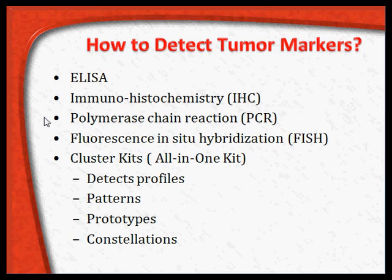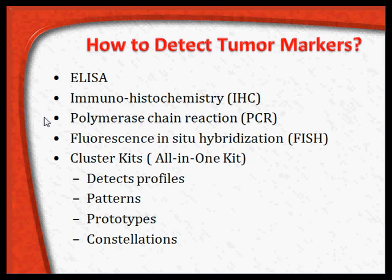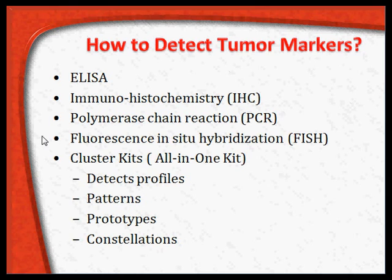When RNA is present, we use RT-PCR (reverse transcriptase PCR). When it is DNA amplification, we use ordinary PCR to detect genetic materials used as tumor markers. Another technique is fluorescence in-situ hybridization, called FISH, which is used to fluoresce tumor antigen-antibody complexes by hybridization technique.